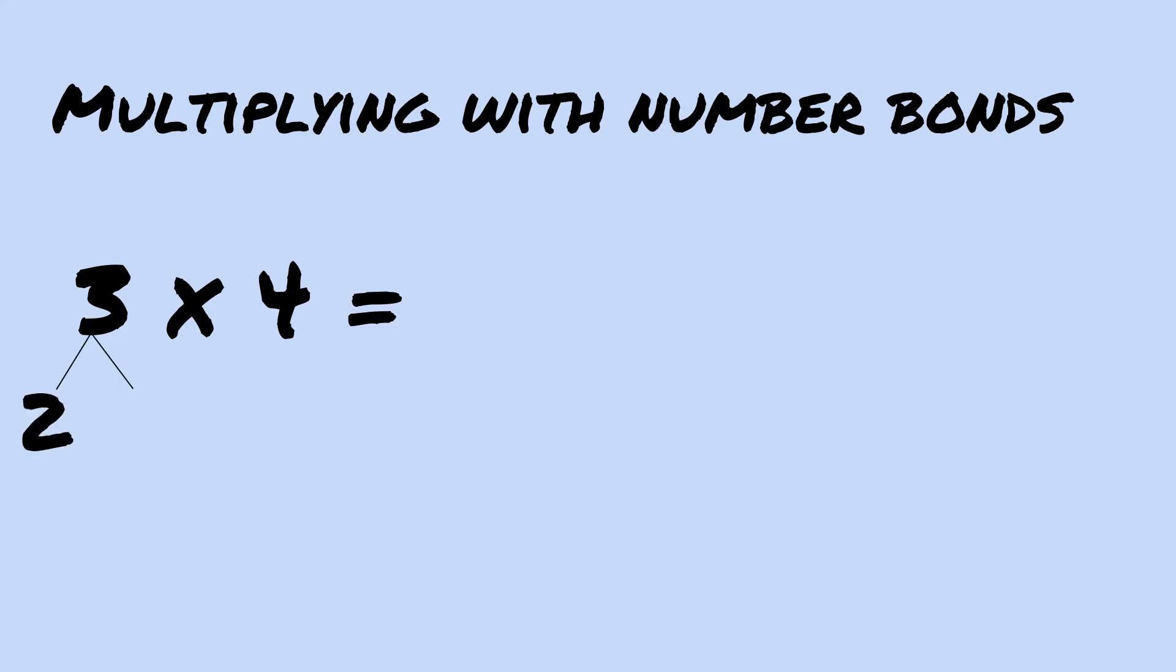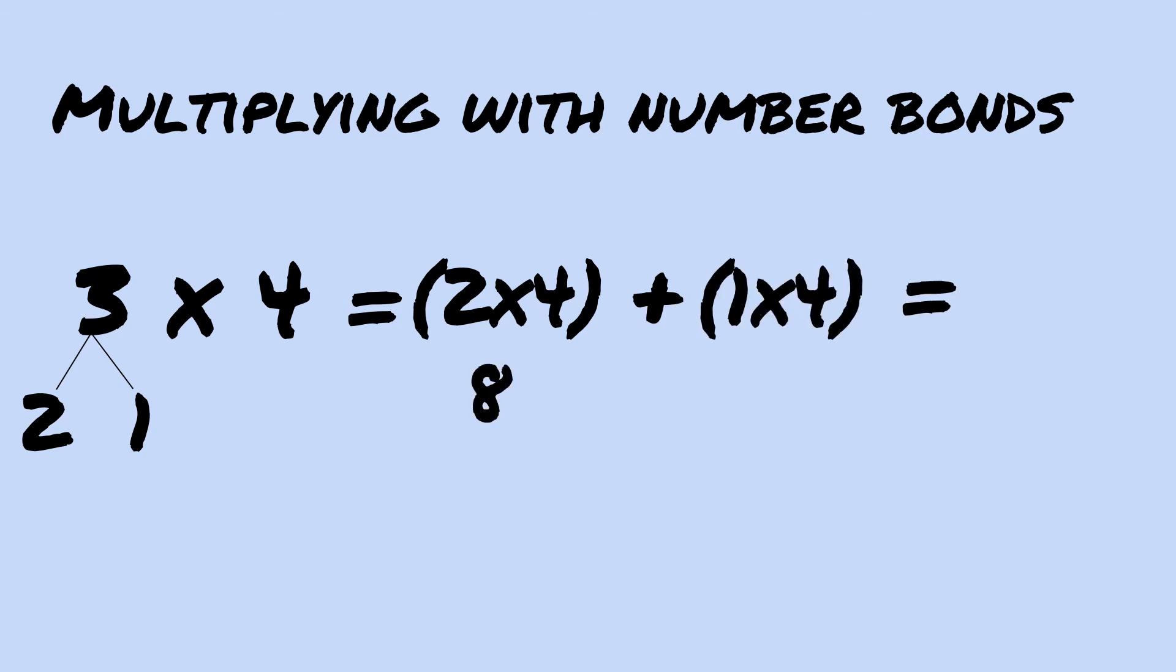For example, to solve three times four, we can use what we already know by decomposing the three to find two times four plus one times four. Adding eight plus four is easier with number bonds as we make ten and then add two more.